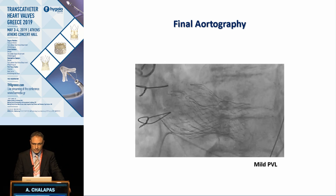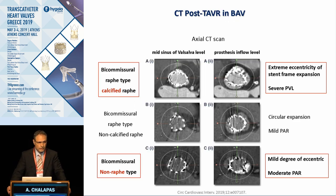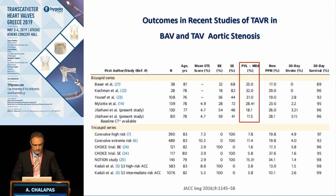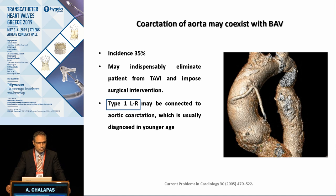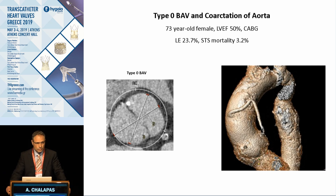Understanding the anatomy of the bicuspid valve is crucial. Data show that the type of bicuspid valve — with or without raphe — and the calcium volume can affect the centricity of stent frame expansion and therefore the incidence of paravalvular leak. The incidence of more than mild paravalvular leak is almost two times higher compared to tricuspid valves, and the need for a second valve is eight times higher. Coarctation of the aorta coexists in up to 35% of cases and is more common in type 1 left-right fusion bicuspid valve.